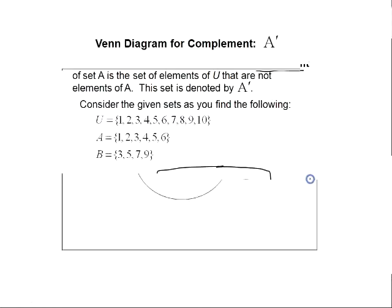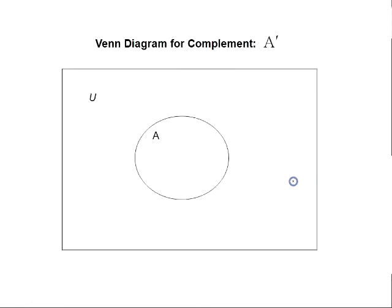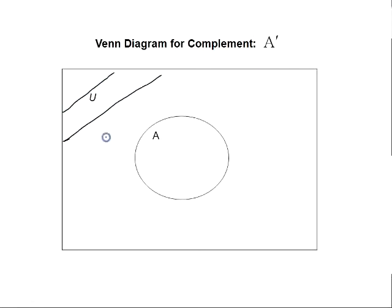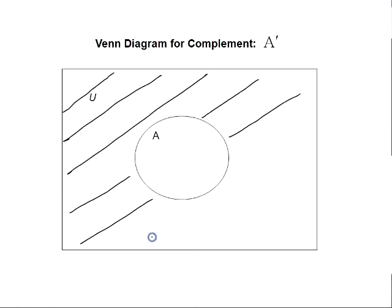Let's look at the Venn diagram for the complement of A. The complement of A is everything in the universal set that's not in A. Everything in the universal set that's not in set A will be everything outside of circle A.